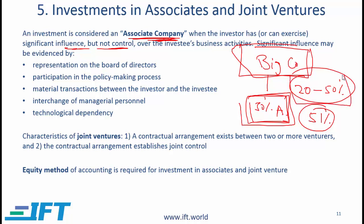Other than this general ballpark of 20% to 50%, there are other items which can suggest significant influence, and those items are: representation on the board of directors — in other words, representatives from big company who sit on the board of company A — participation in the policymaking process, material transactions between the investor and investee, interchange of managerial personnel, and technological dependency. If any of these hold, that would suggest significant influence.